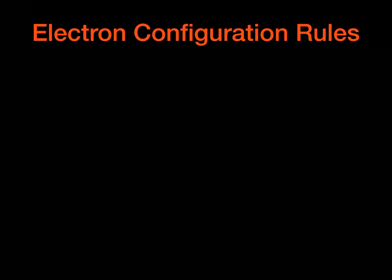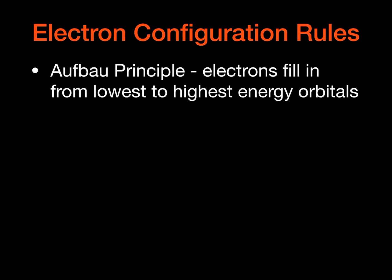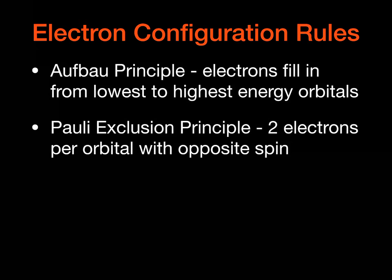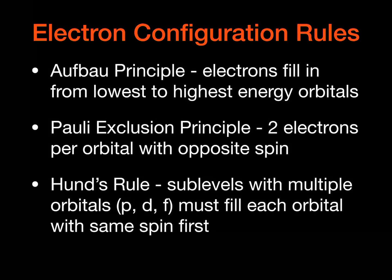So we have some rules for how these things fill in to elements. The Aufbau principle says the electrons fill in from lowest to highest energy orbitals. And so it's going to start with the S, and then it's going to go to the P's. And it starts with the 1S, then it would go to the 2S. Pauli exclusion principle says that we have two electrons per orbital, and if they are both in the same orbital, they have to have opposite spin. And then Hund's rule says that sub-levels with multiple orbitals, so the P's, the D, and the F orbitals, must fill each orbital with the same spin first, one in each particular orbital, and then we start to backfill.